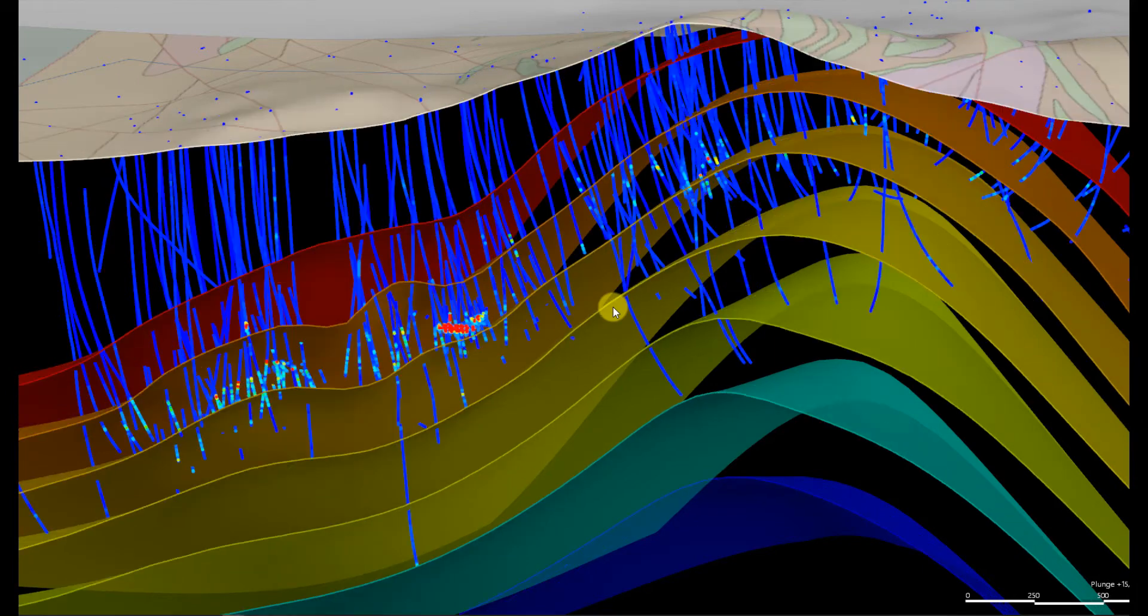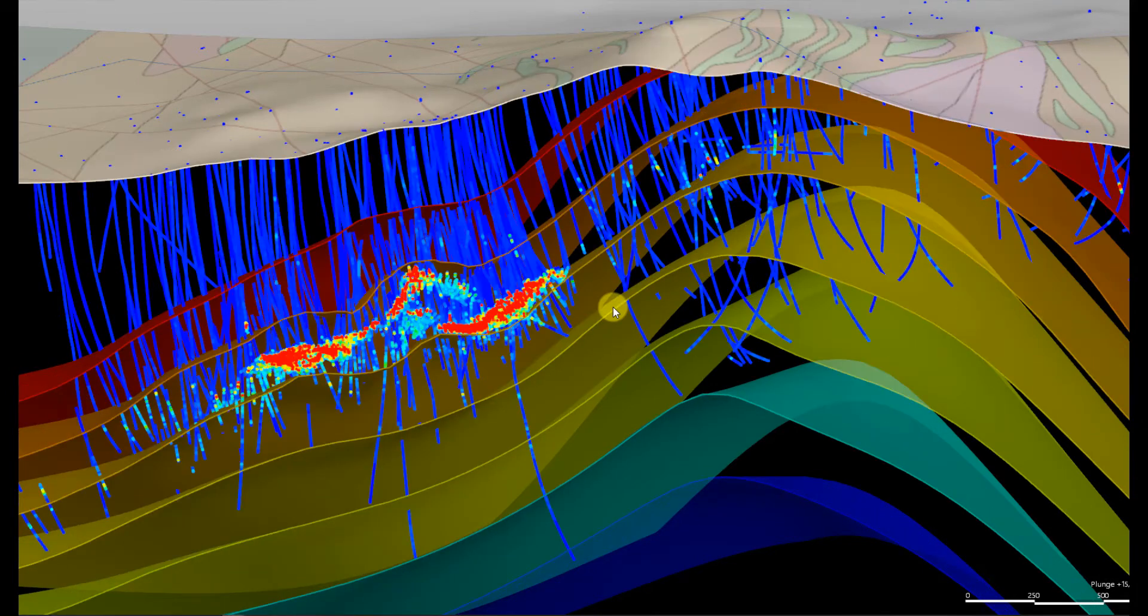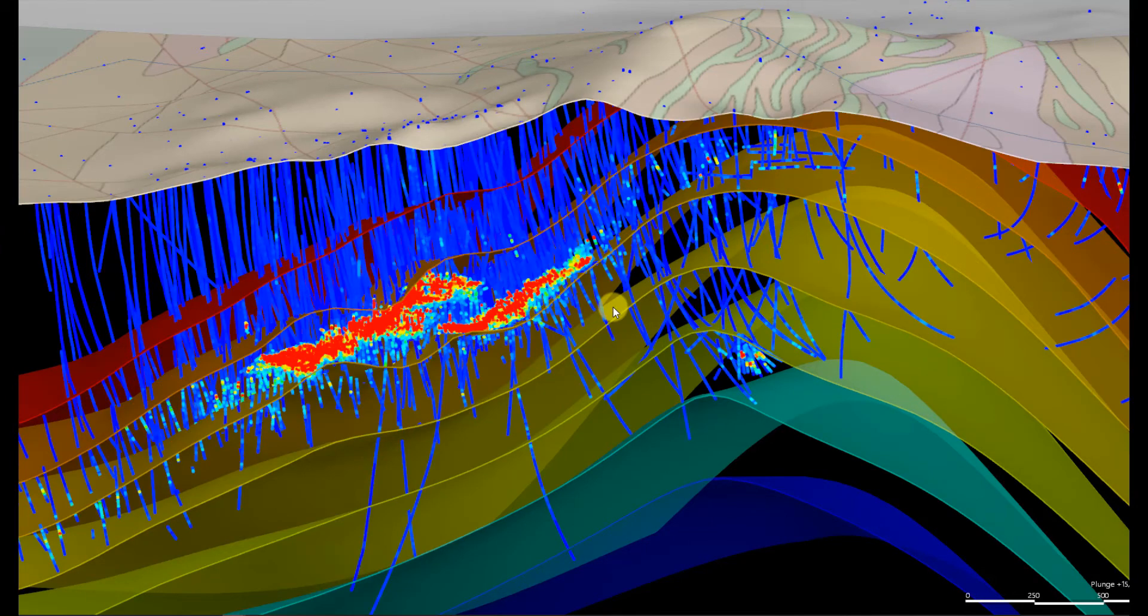The bedding model was generated from interpreting the bedding from the lithological data and formed surfaces were interpolated. The next image I'm going to rotate to is a down plunge view of the Maliv deposit itself, so I'm going to rotate this view looking towards the northwest.